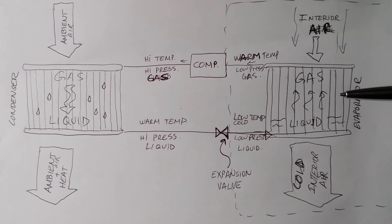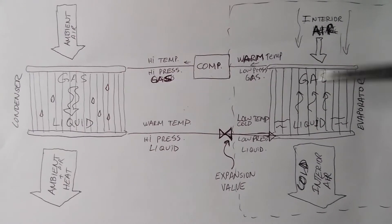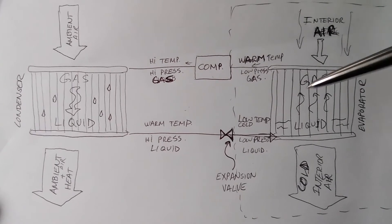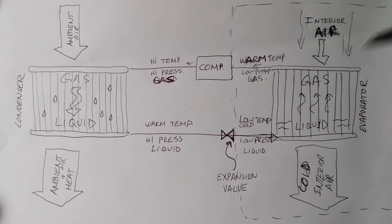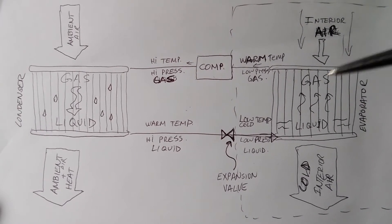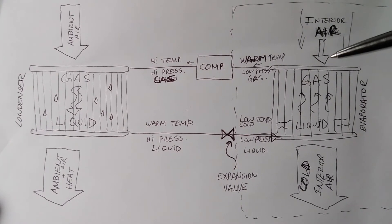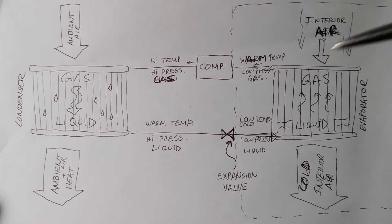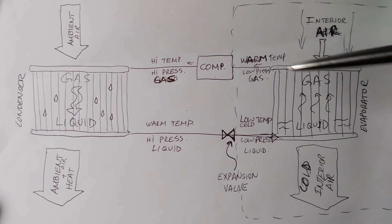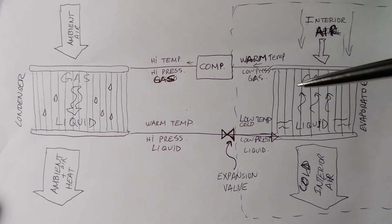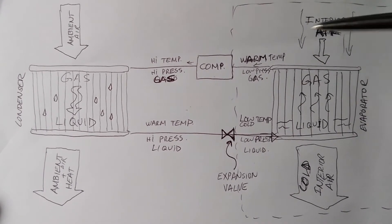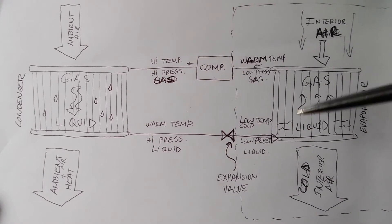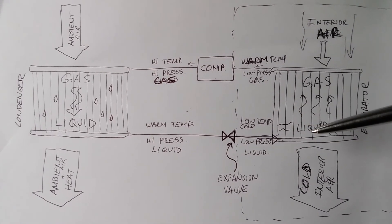Ambient heat is being dumped into the pot of water, melting the ice — yet the temperature stays at 32°F the entire time the water is changing phase from solid to liquid. All that heat energy goes into the phase change itself rather than raising the temperature.